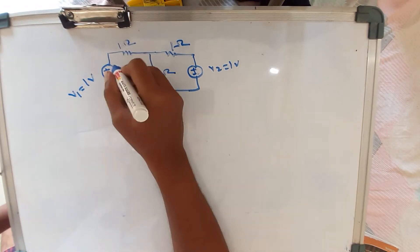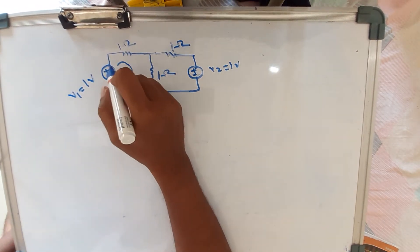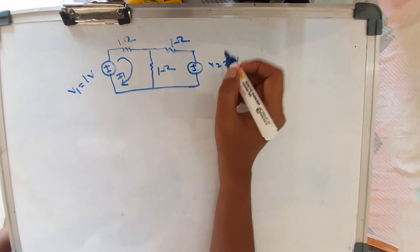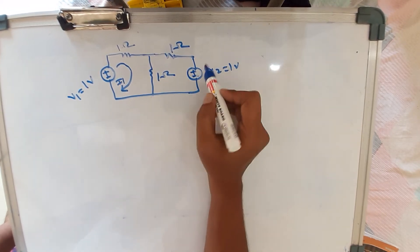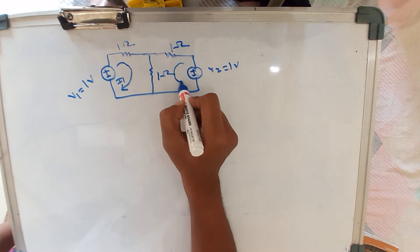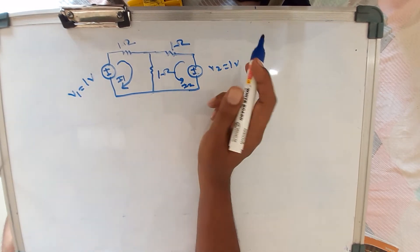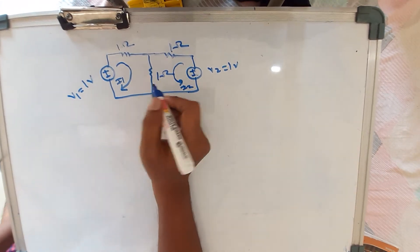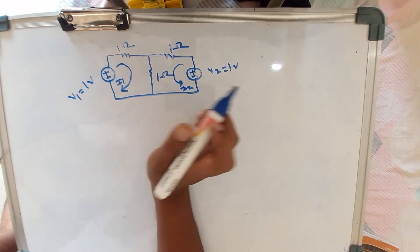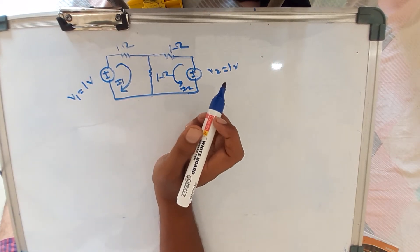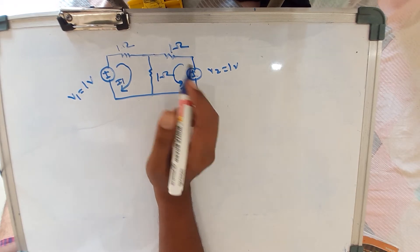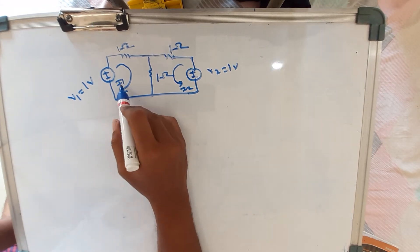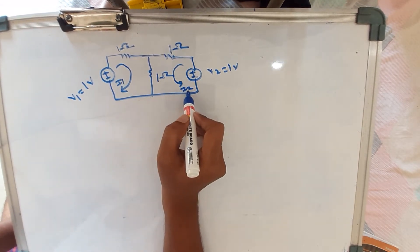For this loop, the current is flowing from plus to minus, so I will mark it as loop number one with current I1. For the second loop, the current is also flowing from plus to minus, so I will mark the direction of current as I2. After identifying the two loops, the number of equations must equal the number of loops. For the first loop, I1 is the mesh current, and for the second loop, I2 is the mesh current.